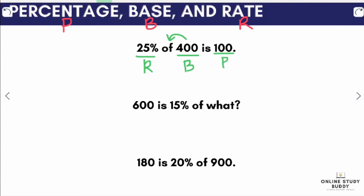Next, we have: 600 is 15% of what? So 600 is associated with the word 'is', therefore 600 is our percentage P. 15% is our rate R. And in this example, we are looking for the base B — that's what the 'what' represents.